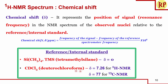If deuterochloroform (CDCl3) is used as solvent, the chemical shift is 7.26 in proton NMR and 77 in C13 NMR. But delta is 0 if TMS is taken as reference for both proton and C13 NMR. The formula is multiplied by 10^6 because the spectrometer frequency is in megahertz while the signal and reference frequencies are in hertz.